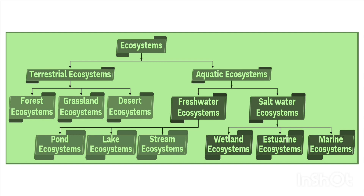Ecosystem can be terrestrial or aquatic. Under terrestrial ecosystem, forest, grassland, and desert ecosystems are present. Under aquatic ecosystem, freshwater and saltwater ecosystems are present. Under freshwater ecosystem, pond, lake, and stream ecosystems are there. Under saltwater ecosystem, wetland, estuarine, and marine ecosystems are present.